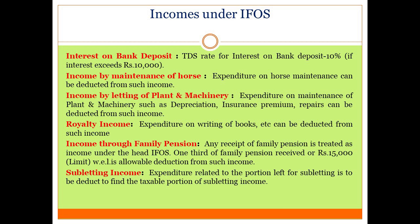Expenditure related to maintenance of plant and machinery — such as depreciation, insurance premium, and repairs — can be deducted from letting income. Income through family pension: if an assessee receives a family pension, it is treated as income under IFOS, from which a standard deduction can be claimed — that is one-third of family pension received or Rs. 15,000, whichever is less. Subletting income: if an assessee has taken a house on rental basis and sublets any portion, income arising from subletting is taxable under IFOS, and expenses related to that sublet portion can be deducted.